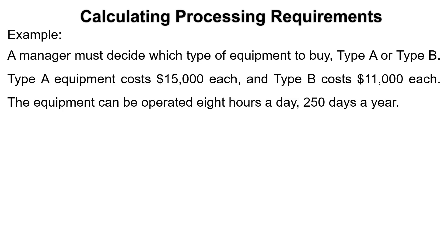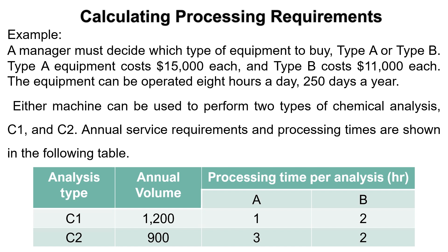A manager must decide which type of equipment to buy, Type A or Type B. Type A equipment costs $15,000 each and Type B costs $11,000 each. The equipment can be operated 8 hours a day, 250 days a year. Either machine can be used to perform two types of chemical analysis, C1 and C2. Annual service requirements and processing times are shown in the following table.